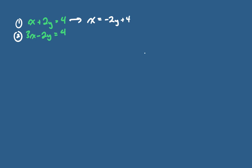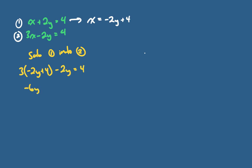Now I have an x-equals form and I can substitute it into the second equation. I declare I'm subbing equation 1 into equation 2: substituting negative 2y plus 4 in for x in the second equation, and expanding.